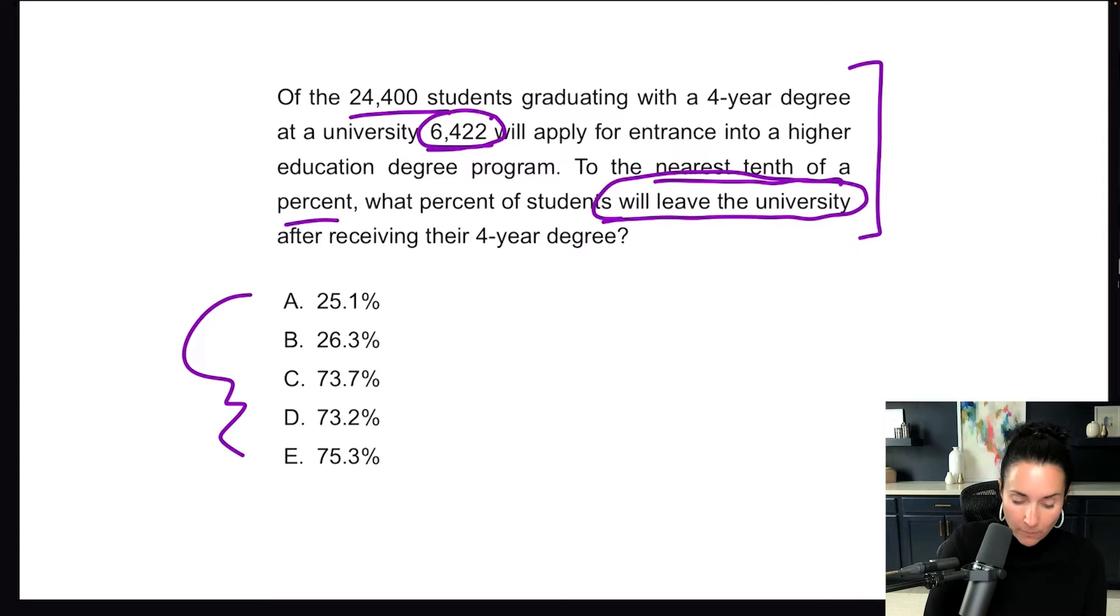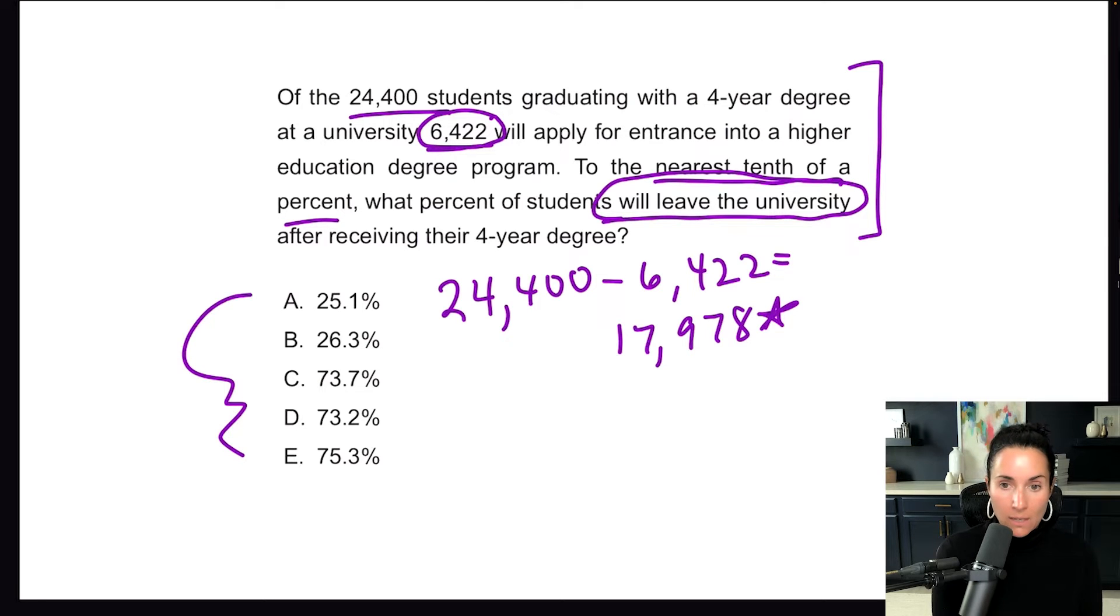So how do we figure this out? Well, let's take the total number of people at the university, 24,400, and subtract the 6,422. And when we do that, we get 17,978. This is the number of students who will leave. The 6,422 students, they're going to stay and get more degrees. The rest are going to leave, and that's this number here.